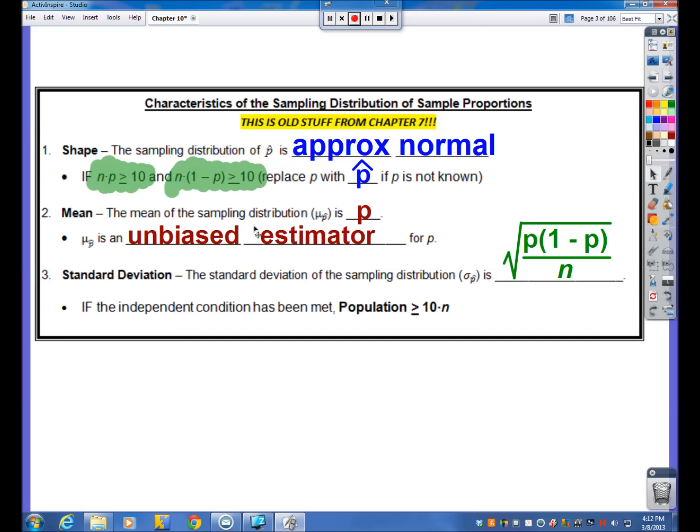For example, the mean of a sampling distribution, mu sub p-hat, if we took our many, many, many p-hats from all of our many, many, many random samples, and we found the mean, mu, of all of these p-hats, the number that we would get would be the population proportion, which is the value that we would try to estimate in confidence intervals. We would try to capture this particular value, and we would say that mu sub p-hat was an unbiased estimator for p, that they were really the same thing.